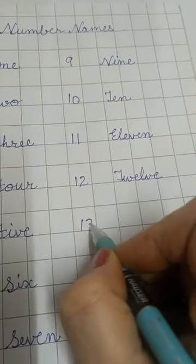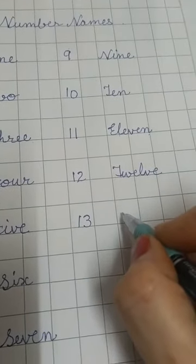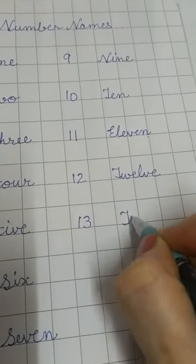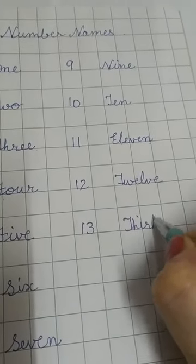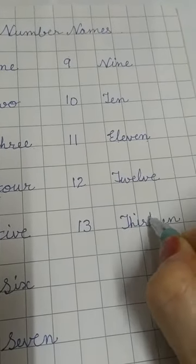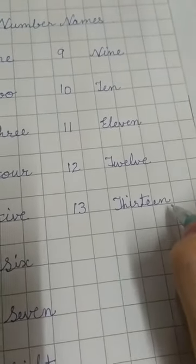Next is 13. Again THA. Like in 3. THA. It is T-H-I-R, thir. Teen. T-E-E-N, teen. Thirteen.